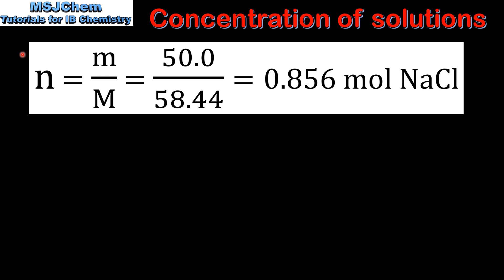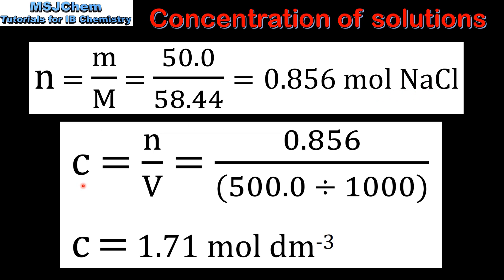Next we'll calculate the concentration in moles per decimeter cubed. First we'll calculate the amount in moles using the equation: amount in moles equals mass divided by molar mass. The mass of sodium chloride is 50 grams and the molar mass is 58.44 grams per mole. This gives us 0.856 moles of sodium chloride. Next we use the equation concentration equals amount in moles divided by the volume in decimeters cubed, giving us a concentration of 1.71 moles per decimeter cubed.